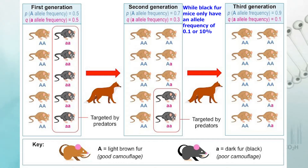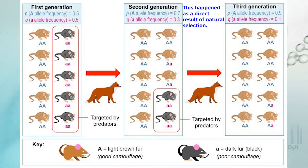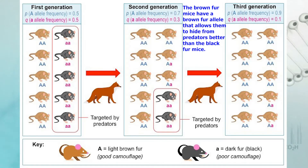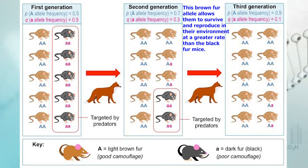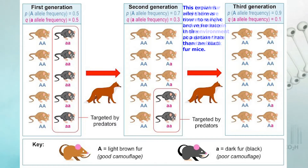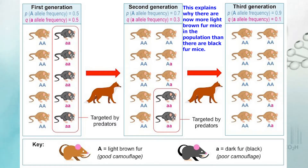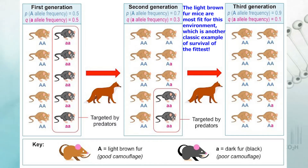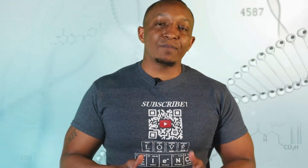Black fur mice only have an allele frequency of 0.1 or 10%. This happens as a direct result of natural selection. The brown fur allele allows light brown fur mice to hide from predators better than the black fur mice, allowing them to survive and reproduce at a greater rate. This explains why there are now more light brown fur mice in the population. The light brown fur mice traits are most fit for the environment — another classic example of survival of the fittest.